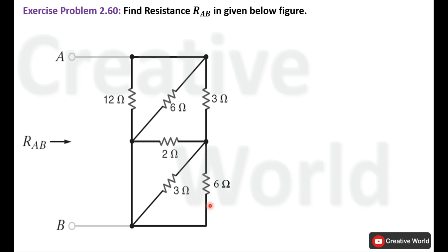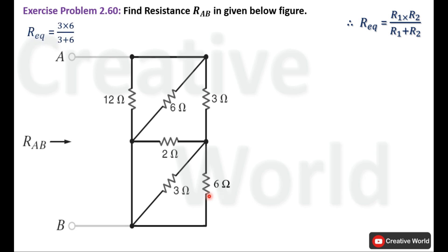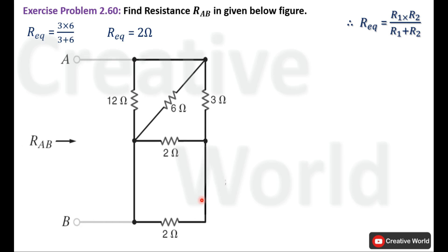Now these two resistances, 6 ohm and 3 ohm, are in a parallel connection. We will find their equivalent resistance using the formula: R equivalent equals R1 multiplied by R2 divided by R1 plus R2. Here R1 is 3 ohm and R2 is 6 ohm. Placing values: the product of 3 and 6 is 18, and the sum of 3 and 6 is 9. So 18 divided by 9 gives R equivalent equal to 2 ohm.